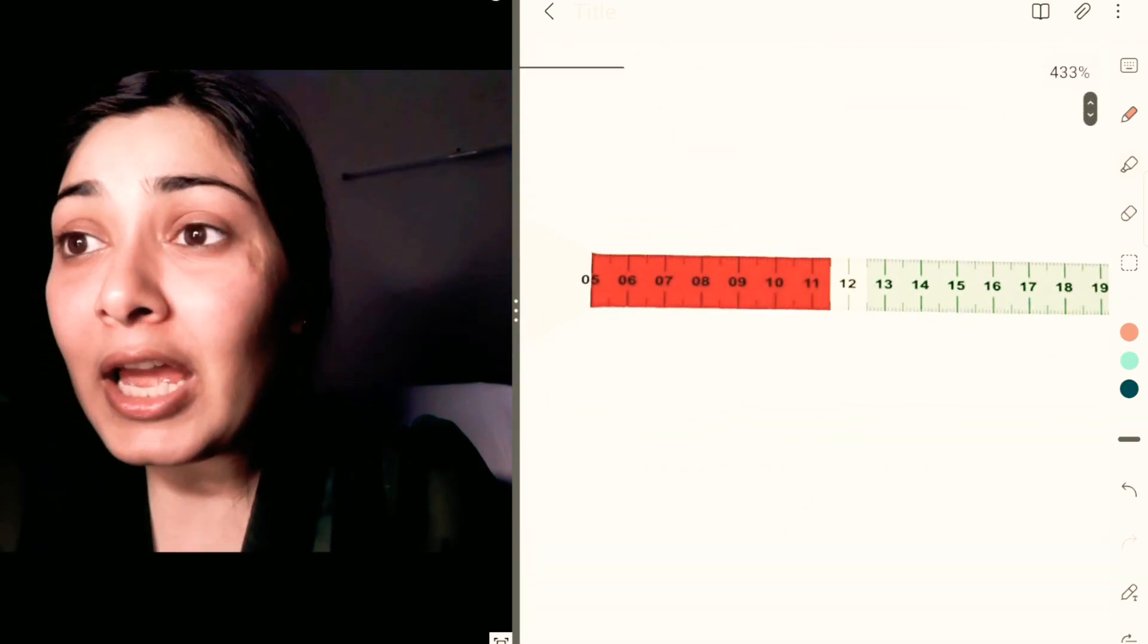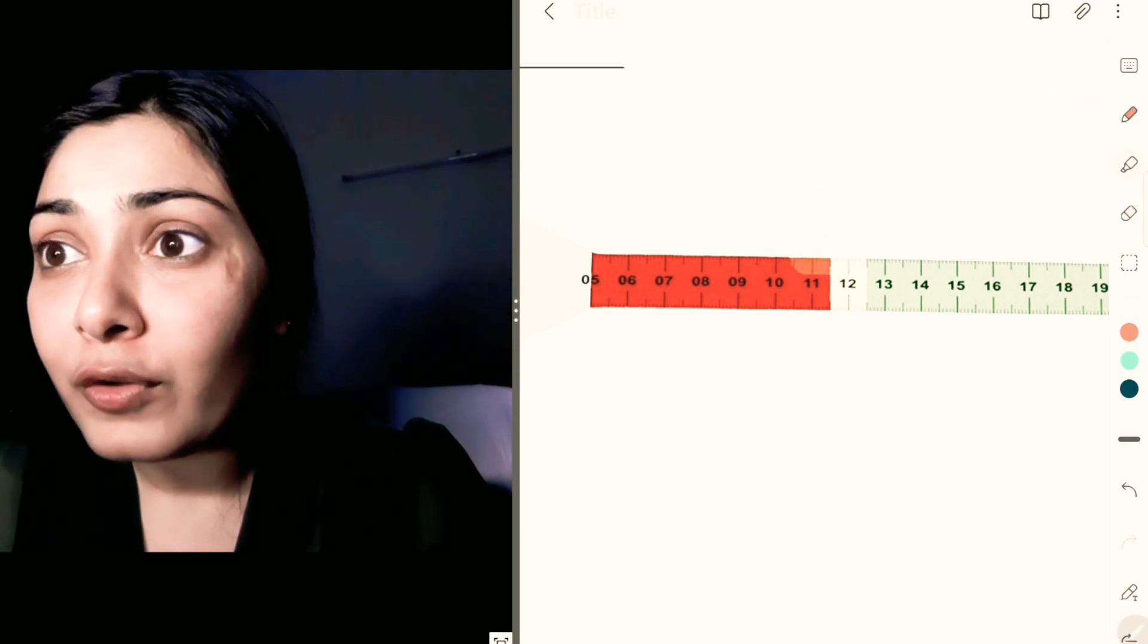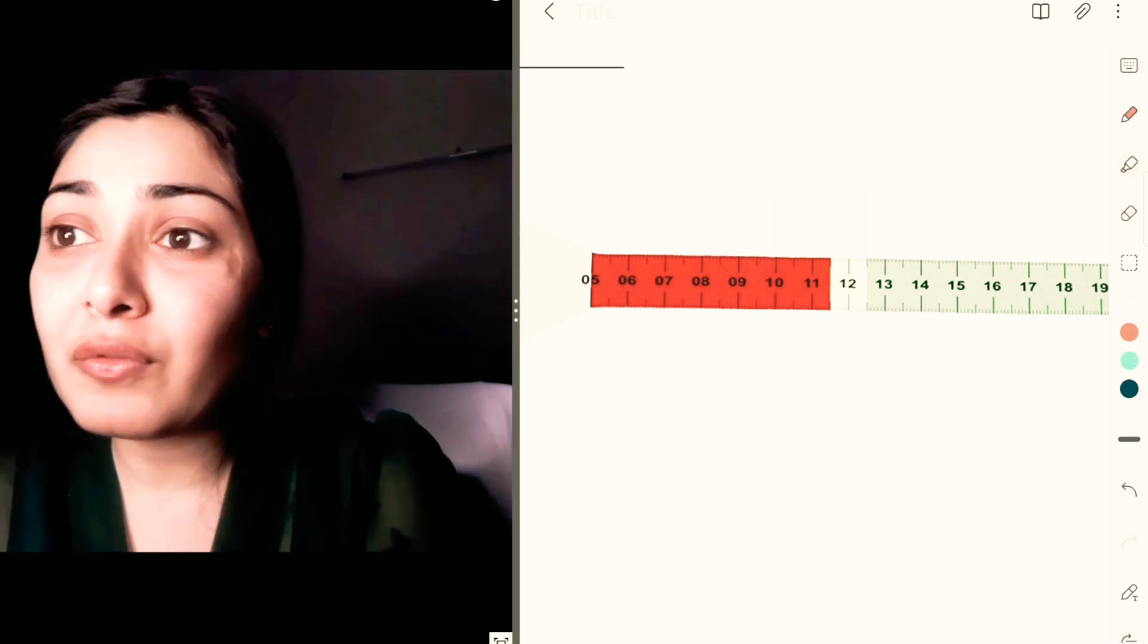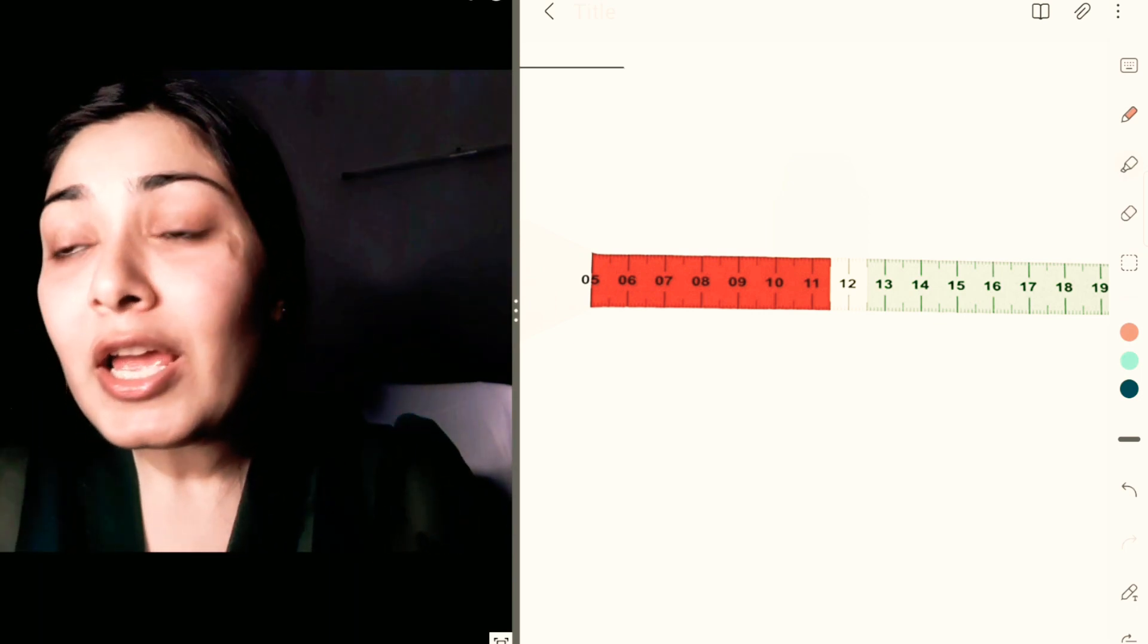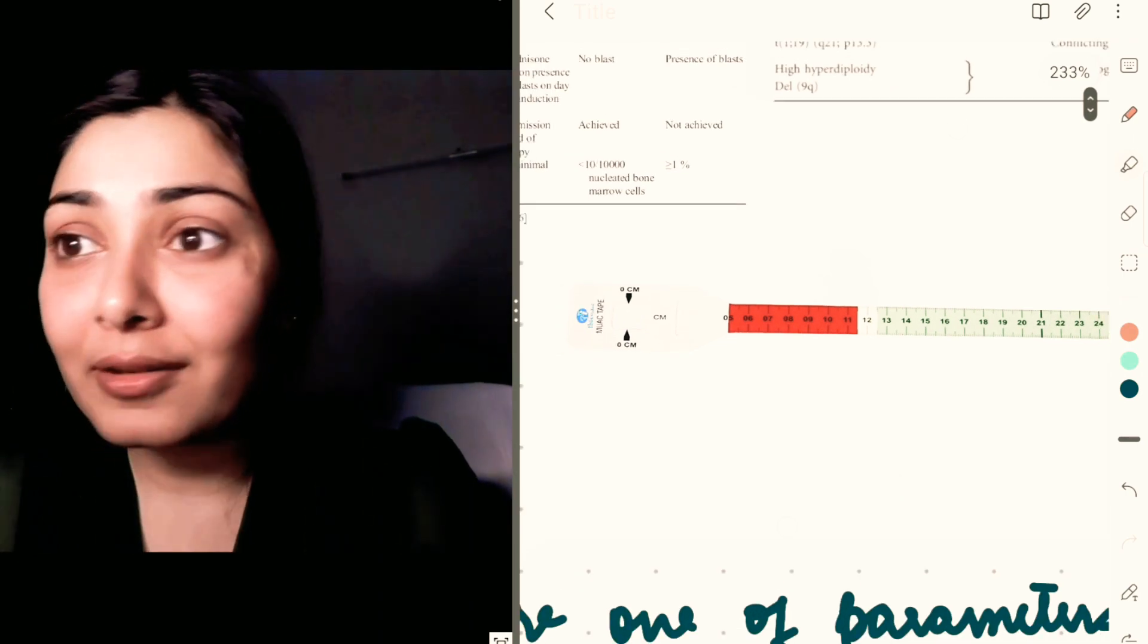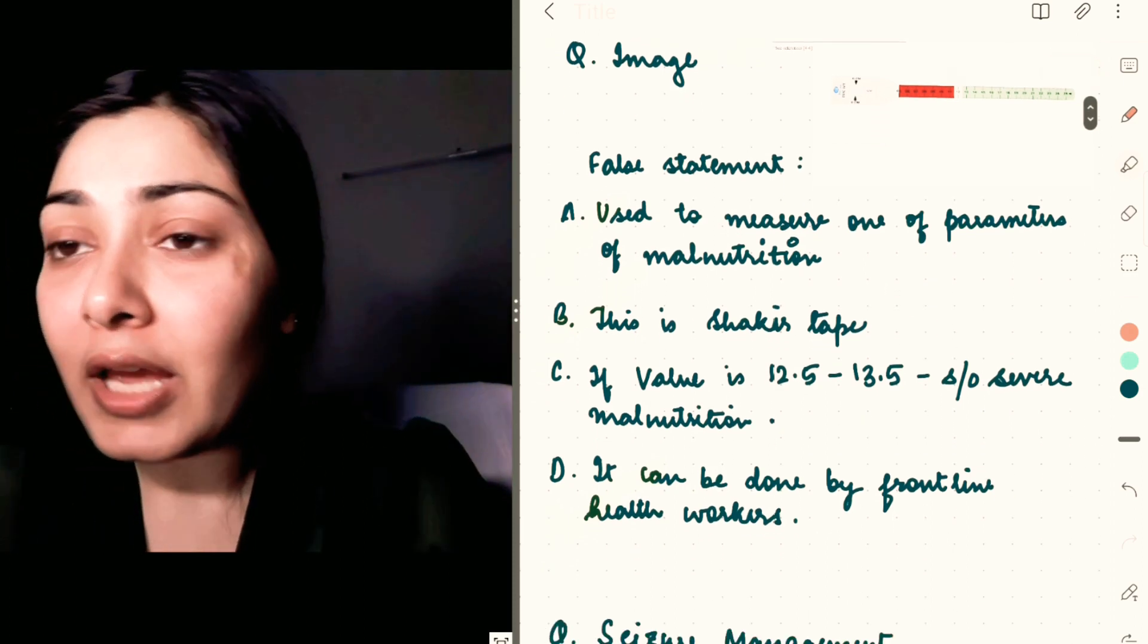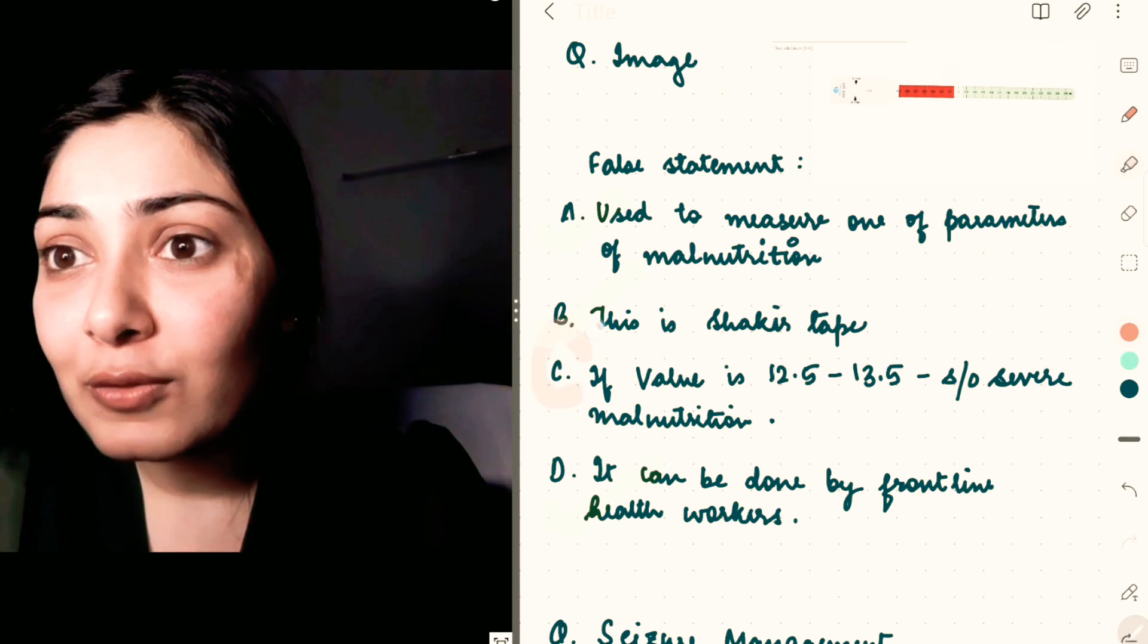But we all know, as you can see in this image as well, the red zone begins at the level of 11.5. So severe malnutrition is less than 11.5, yellow zone is between 11.5 to 12.5, and above 12.5 is green zone—the nutritional status of the child is adequate. So option C is the wrong one, and if you had to pick a false statement, this would be the correct option.